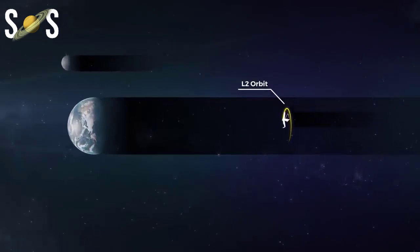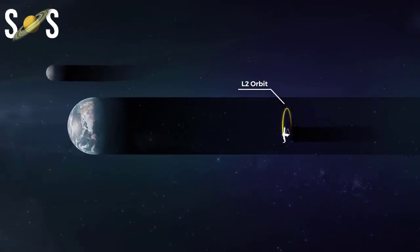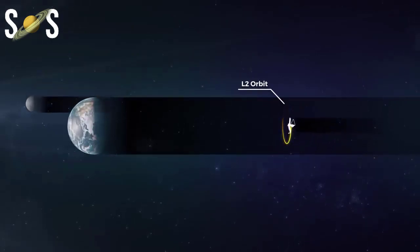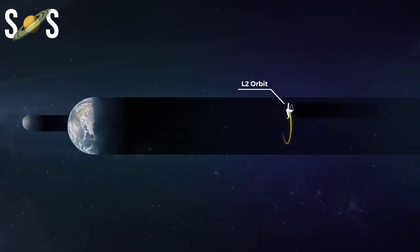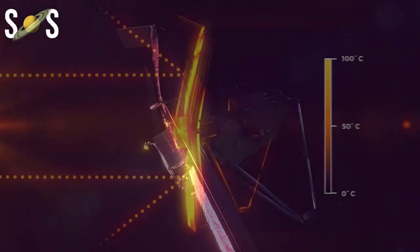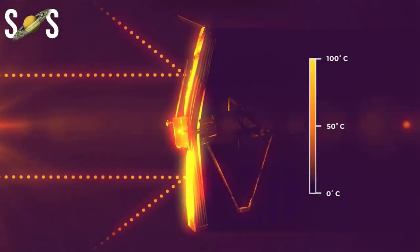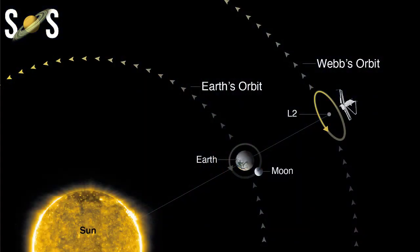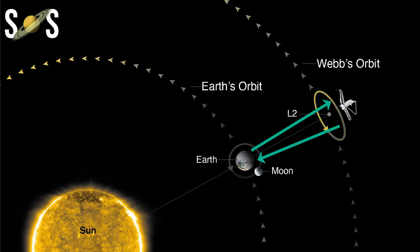Communicating with Webb: Webb's position out at L2 also makes it easy for us to talk to it. Since it will always be at the same location relative to Earth in the midnight sky, about 1.5 million kilometers away, we can have continuous communications with it. As the Earth rotates, through the Deep Space Network using three large antennas on the ground located in Australia, Spain, and California, during routine operations, Webb will uplink command sequences and downlink data up to twice per day through the DSN.